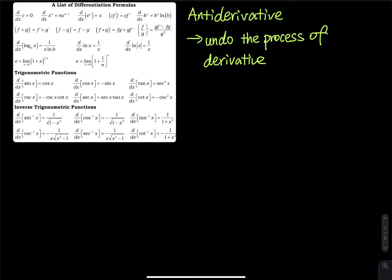So how do you undo the process of derivative? Let me give you a very basic example. Let's say we have f(x) equals x to the third power. This time we are not going to take the derivative. If you take the derivative, that is 3x², using simple power rule.